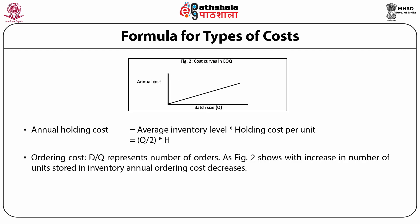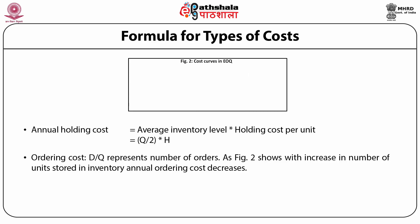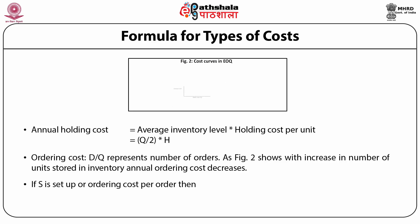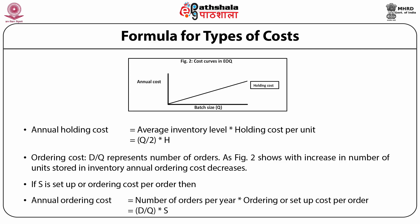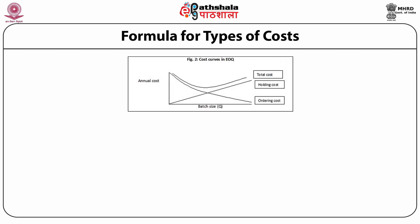For ordering cost: suppose annual demand is 1000 units and the manager orders 100 units per order — he or she has to place an order 10 times. Thus D/Q represents the number of orders. As the figure shows, with increase in number of units stored, annual ordering cost decreases. If S is the setup or ordering cost per order, then annual ordering cost = (D/Q) × S.